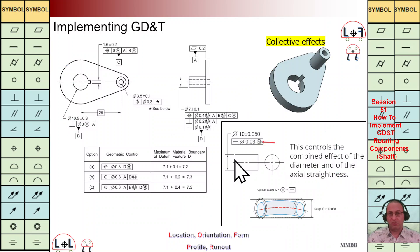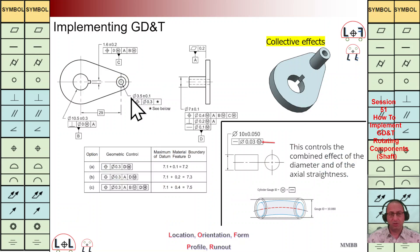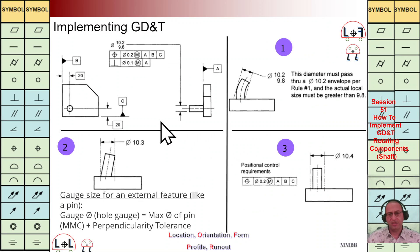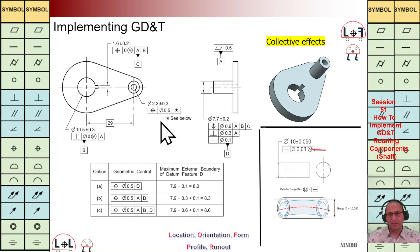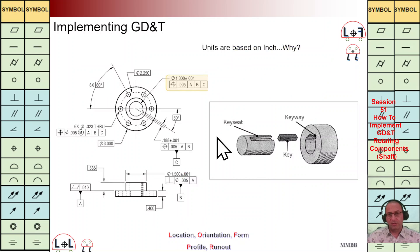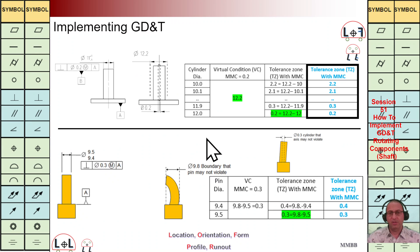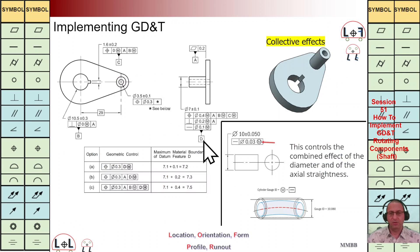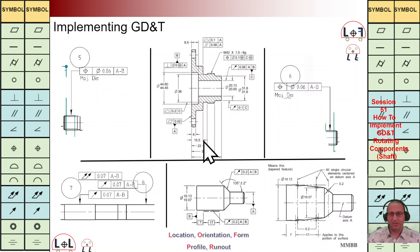For now I would like to close this session. In the comment session I'm going to talk about collective effects, and then step by step I'm going to talk about the flange, key assembly, key seat, key, and keyway. Thank you for today, I hope you enjoyed it. See you next time.